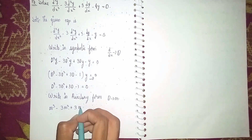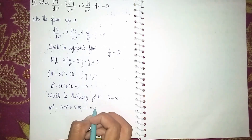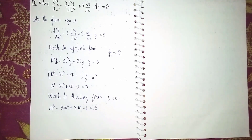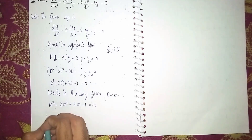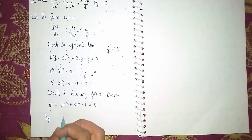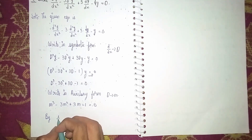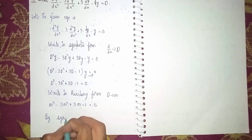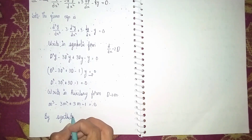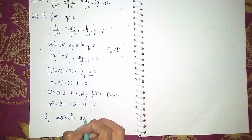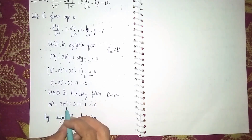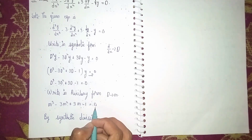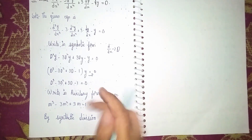So it becomes m³ minus 3m² plus 3m minus 1 equals zero. We can't find the factors directly, so I'm using the synthetic division method — the value at which the left-hand side gives zero.